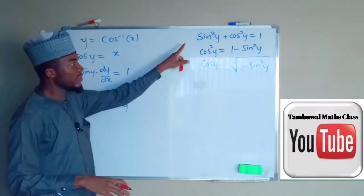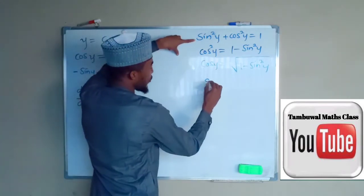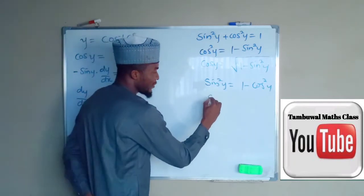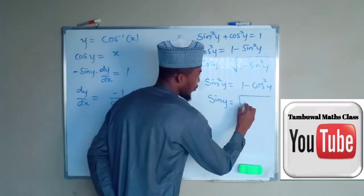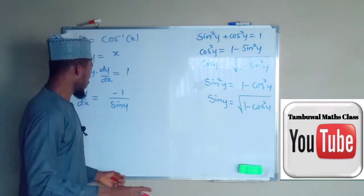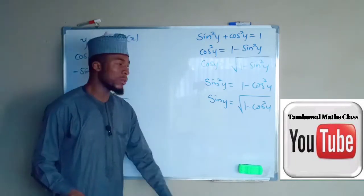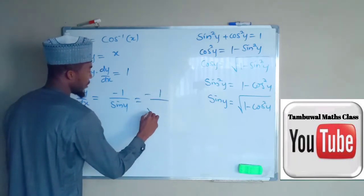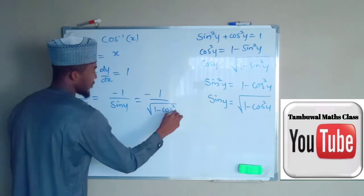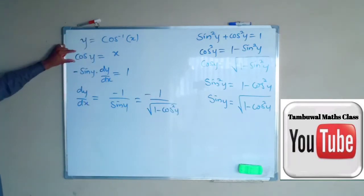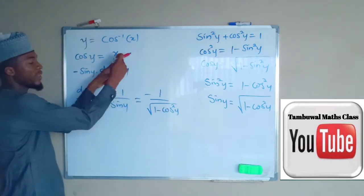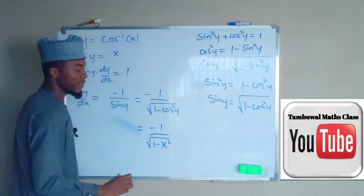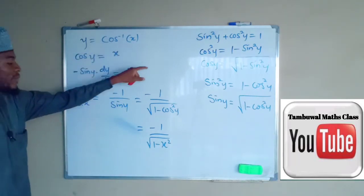Using the same identity, we can express sin²y = 1 − cos²y, so sine y = √(1 − cos²y). Therefore dy/dx = −1 / √(1 − cos²y). Since cos y = x, we substitute cos²y with x², giving dy/dx = −1 / √(1 − x²). This is the derivative of cos inverse of x.